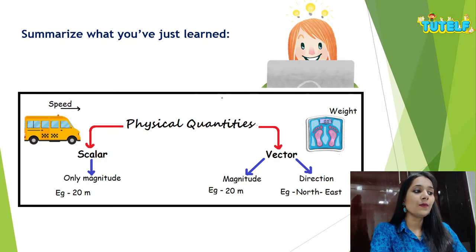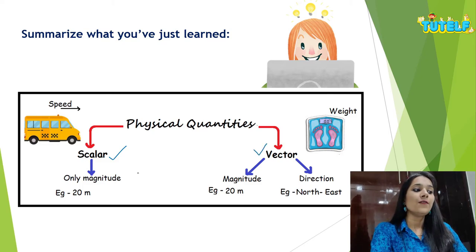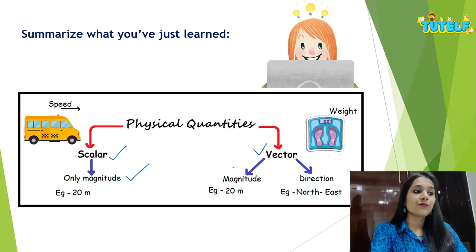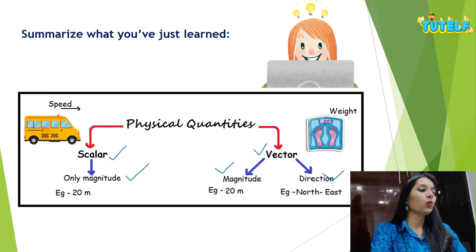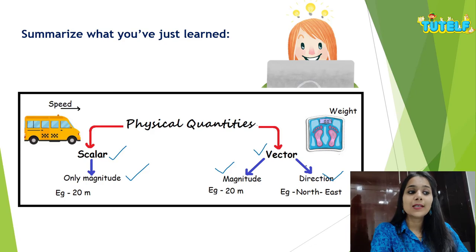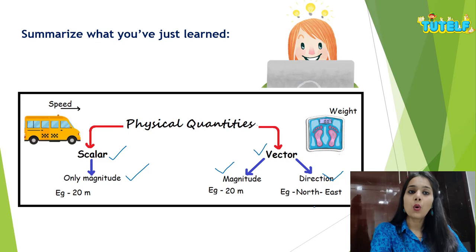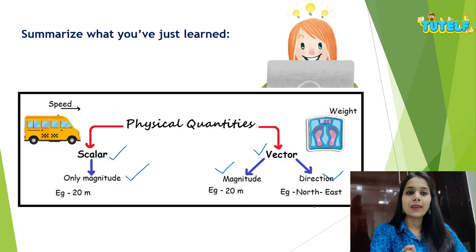Physical quantities are of two types: scalar and vector. Scalar quantities are those which have only magnitude associated with them. Vector quantities have both magnitude and direction. For example, 20 meters is magnitude alone — scalar — while 20 meters northeast has magnitude along with direction — vector. This direction could be a specific direction, or left-right, or forward-backward — any sort of direction.